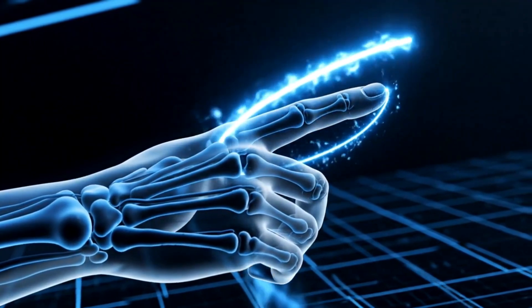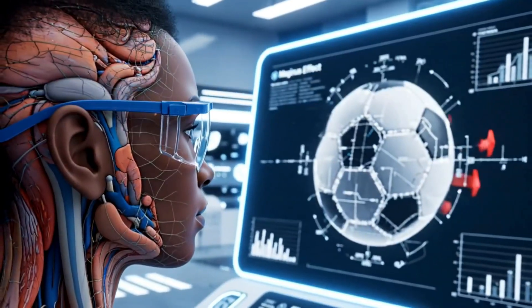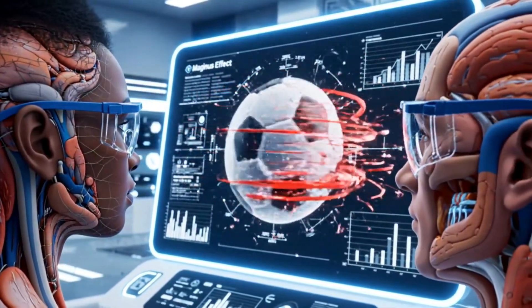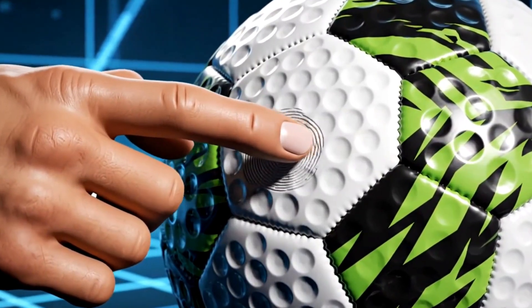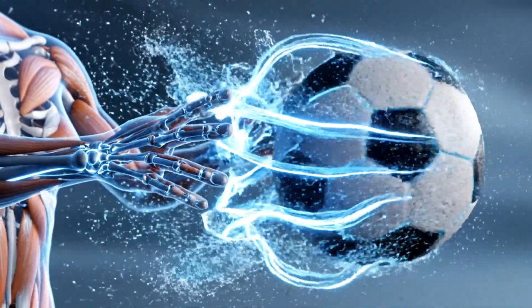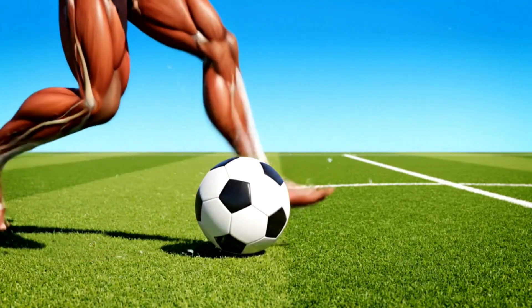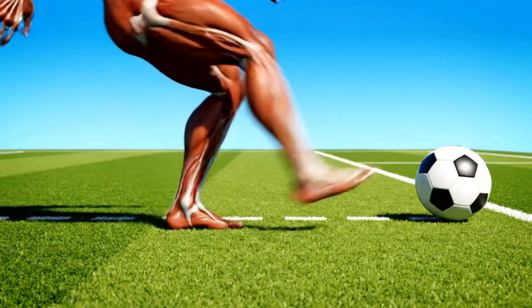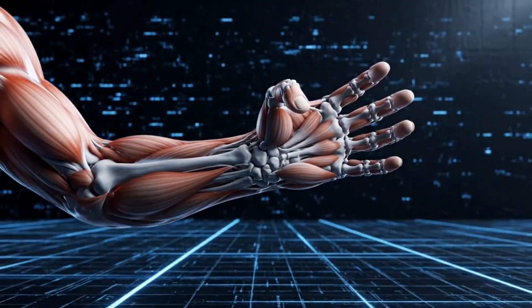Understanding this science allows players to intentionally manipulate the ball's flight path with incredible precision. Engineers and scientists are constantly working to design better balls that maximize the potential of the Magnus effect. Some modern balls have specific textured dimples, much like a golf ball, to stabilize the spin. These tiny design elements ensure the boundary layer of air around the ball interacts optimally, enhancing the curve. Without spin, the ball would travel in a straight line, limited by the force and direction of the initial kick. It's the rotational energy converted into sideways deflection that transforms a simple kick into a work of art.